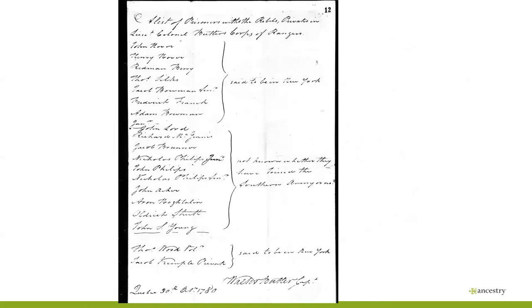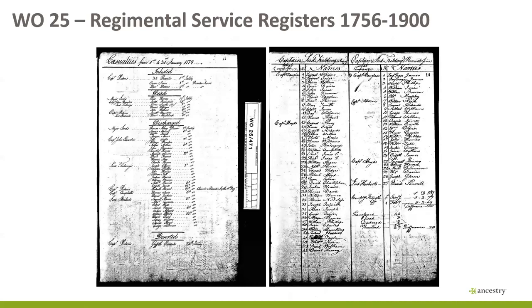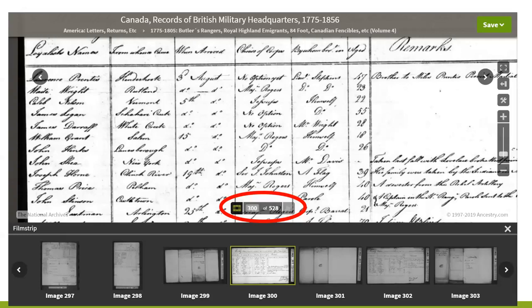There's also a list of prisoners with rebels said to be in New York or not known — you can look at who they took as prisoners, and some of those prisoners joined the British side and came to Canada. We also have regimental service registers, showing casualties for 1779, and on the other side it shows William Bowne was discharged in January. You can go through the list and hopefully find your person.